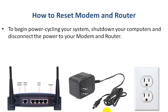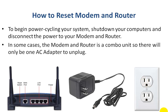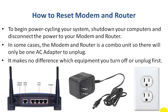To begin power cycling your system, shut down your computers and disconnect the power to your modem and router. To shut down your computer, do that as you normally would. To disconnect the modem and router, they will usually have an AC adapter plugged into an outlet with the other end plugged into the power jack. Most modems and routers don't have a power switch, so you'll need to disconnect either from the power jack or from the wall outlet, whichever is easiest to reach. In some cases the modem and router will be a combo unit — just one box — so there will only be one AC adapter to unplug. It makes no difference which device you unplug first during the shutdown step.